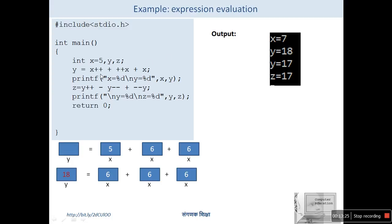Evaluating left to right: the first part is x++. Since it is a post-fix increment, the value is not immediately affected, so we use 5. Then ++x is pre-increment, so x becomes 6 here. The third part also sees the updated x value of 6.